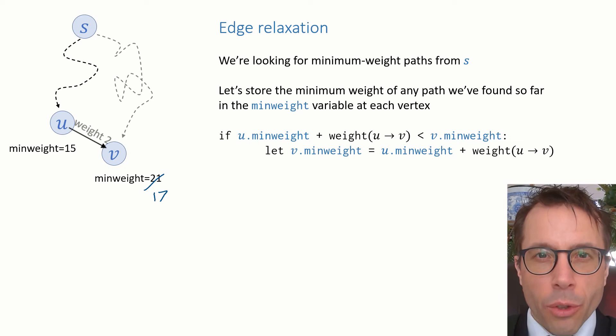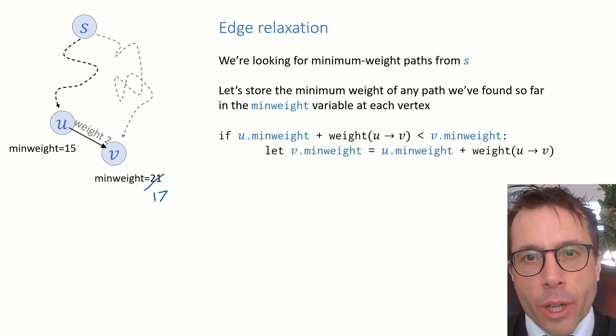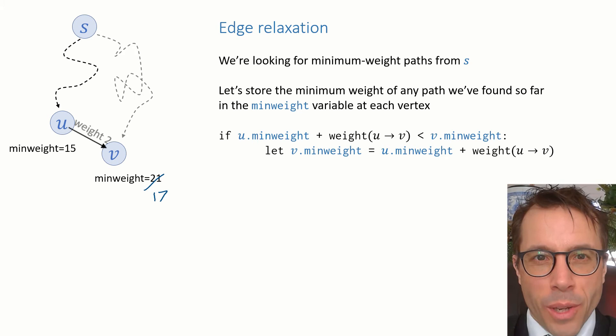This update step is called relaxing the u v edge. And here's what it looks like in pseudocode. We say if u dot min weight plus the weight of the extra edge is less than v dot min weight, then update v dot min weight. And that, in fact, is all it takes to make a shortest-path algorithm.